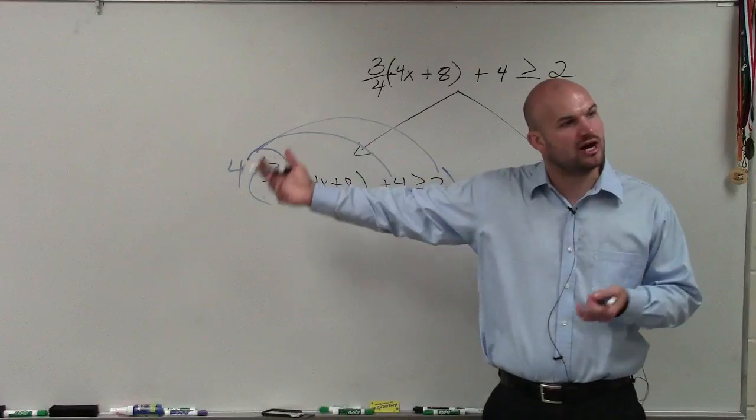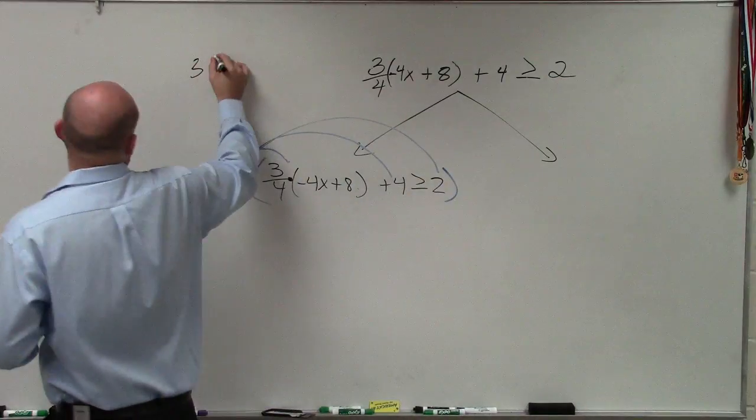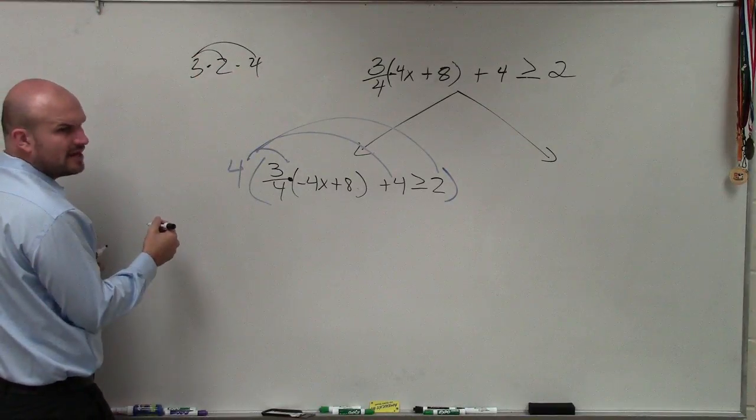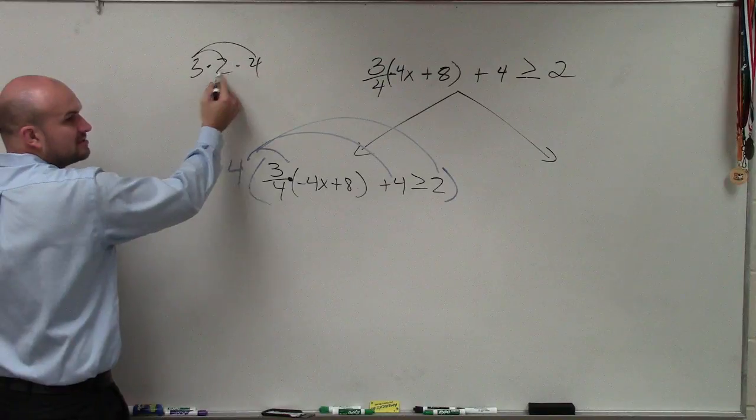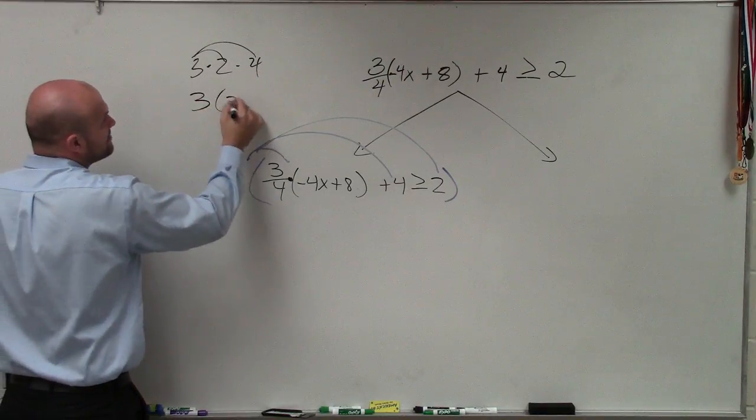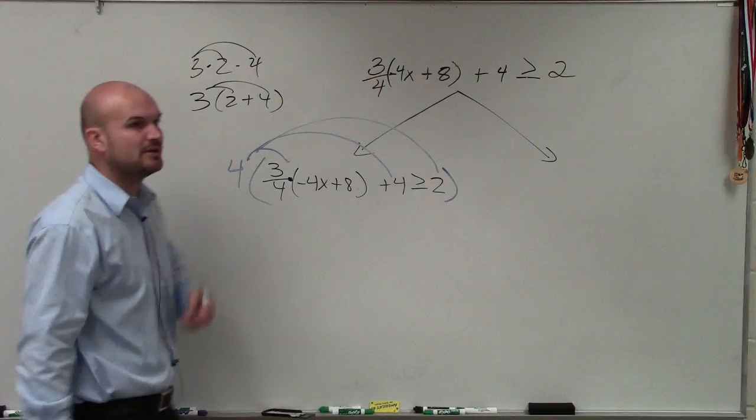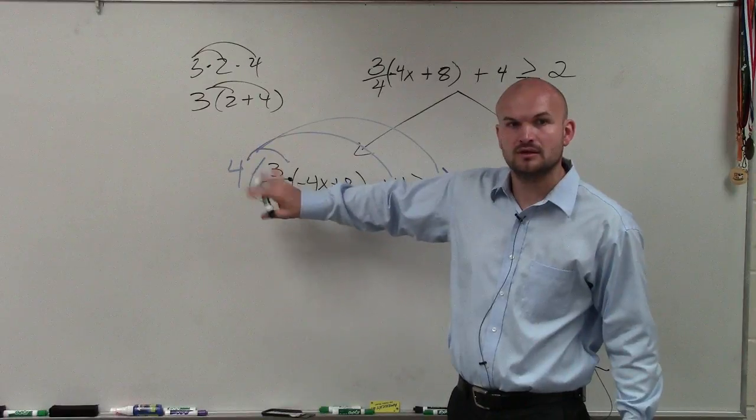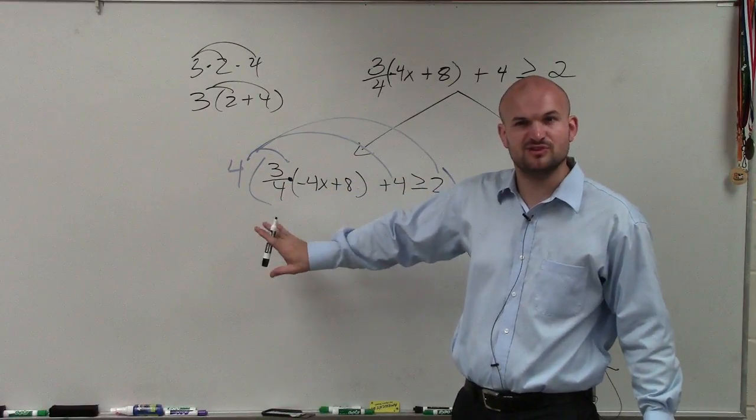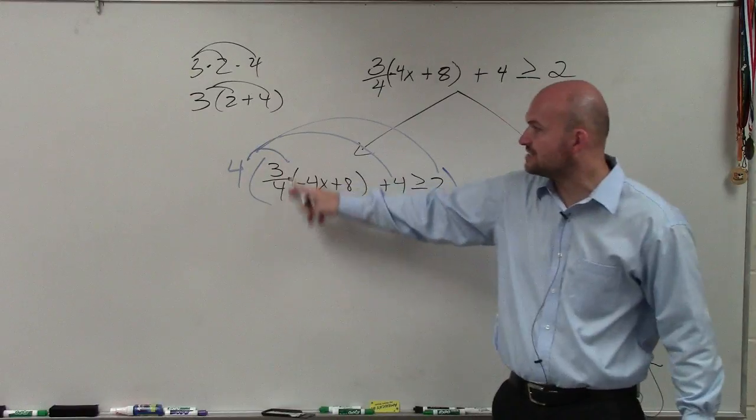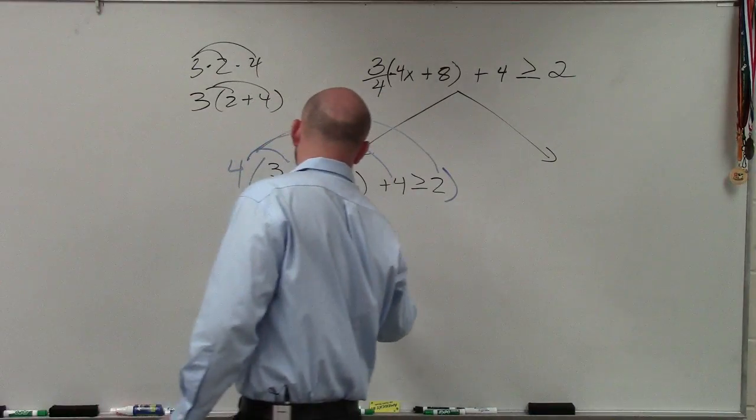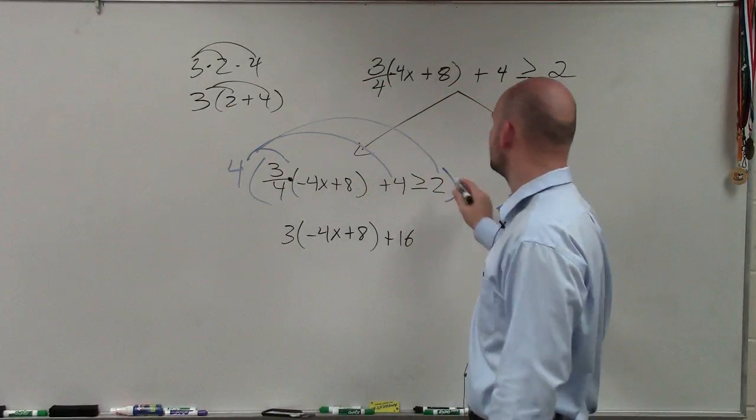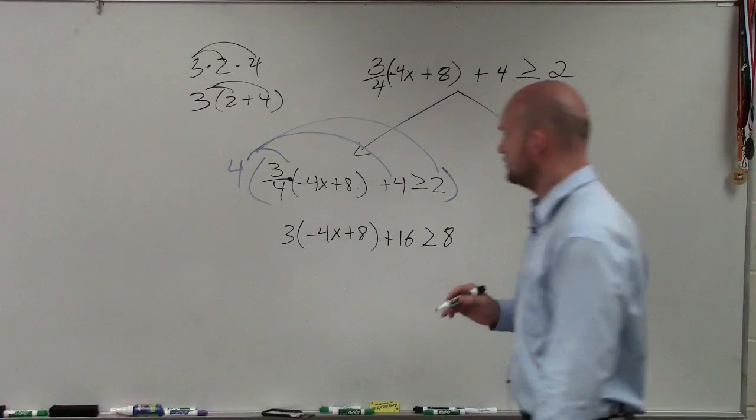So you don't distribute across multiplication. When I say 3 times 2 times 4, you don't say 3 times 2, 3 times 4, right? No, 3 times 2 times 4 is 3 times 2 times 4. If it was 3 times 2 plus 4, then yes, you distribute across addition, across subtraction. But we don't distribute across multiplication. Does everybody understand that? Because it's a confusing point here. So 4 times 3/4 is just going to be 3 times (-4x + 8). 4 times 4 is 16. 4 times 2 is 8.